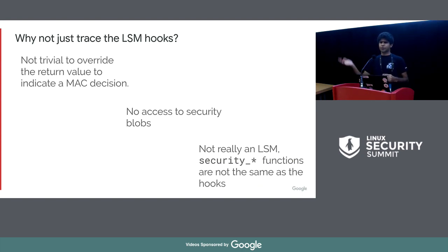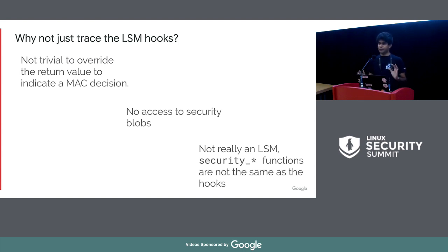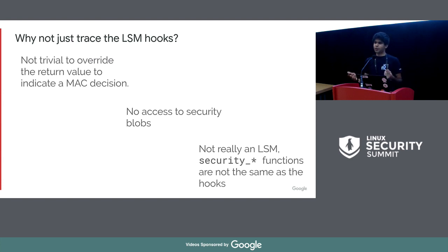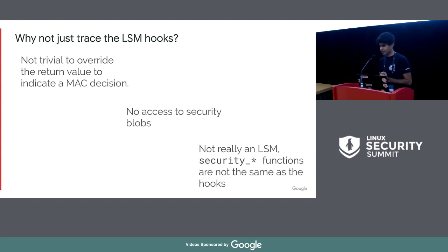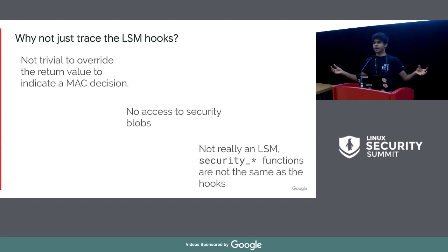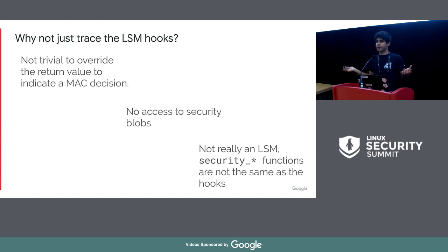Another question: why don't you just trace the LSM hooks? You have BPF prog type trace, or you could create a trace point and trace all the LSM hooks. Seems like an interesting proposition, but first you lose all the formal verification the LSM tries to bring you. It's not trivial to override the return value using current BPF tracing programs to signal a MAC decision. You have no access to security blobs — you want to write into security blobs, but that's not allowed from BPF programs. And it's not really an LSM — the security functions in security.c are wrappers around hooks registered by LSMs, and they sometimes do processing on data before passing it to the registered callback. You miss out on that if you're just tracing LSM hooks.